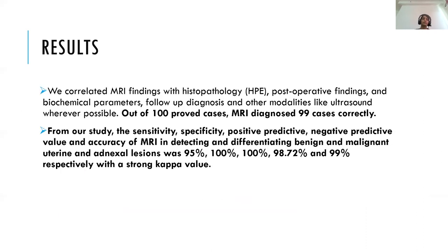Moving on, we correlated MRI findings with histopathology, post-operative findings, biochemical parameters, follow-up diagnosis, and other modalities like ultrasound wherever possible. Out of 100 proven cases, MRI diagnosed 99 cases correctly. From our study, the sensitivity, specificity, positive predictive value, negative predictive value, and accuracy of MRI in detecting and differentiating benign and malignant uterine and adnexal lesions was 95%, 100%, 100%, 98.72%, and 99% respectively, with a strong kappa value.